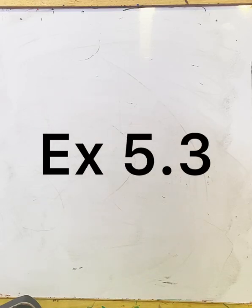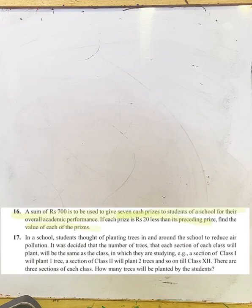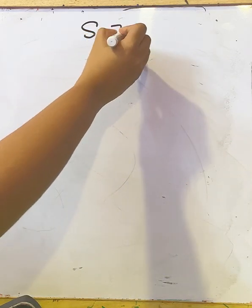Namaste. Today we will do statement problems from Exercise 5.3. A sum of rupees 700 is to be used to give seven cash prizes to students of a school for their overall academic performance. If each prize is rupees 20 less than its preceding prize, find the value of each of the prizes. Here sum is given, S = 700.